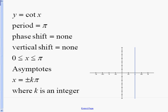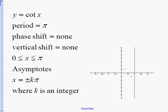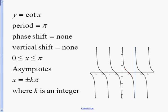On the graph, I'll draw my asymptotes: one at zero, one at pi, one at two pi, three pi — every time we add or subtract the period we get an asymptote. Just like the tangent curve, it crosses in the middle. Halfway on the right-hand side for the cotangent we go down one, and halfway on the left-hand side we go up one. Connect these dots and there's the cotangent curve.